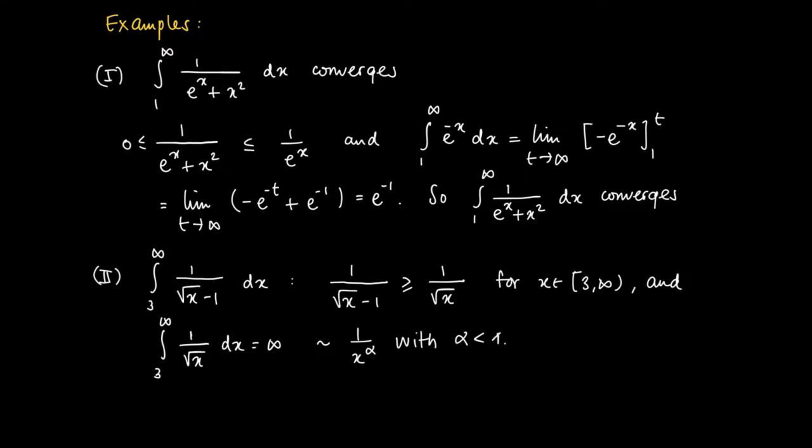But if the smaller function, which is non-negative, is divergent, so the integral from 3 to infinity of 1 over the square root of x does not exist, then neither the integral from 3 to infinity of 1 over the square root of x minus 1 dx exists. So this one is divergent as well.